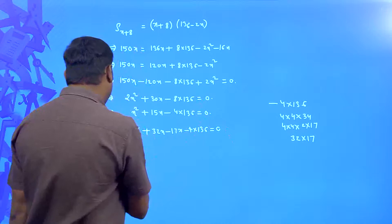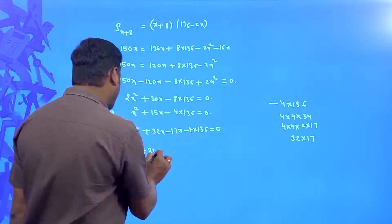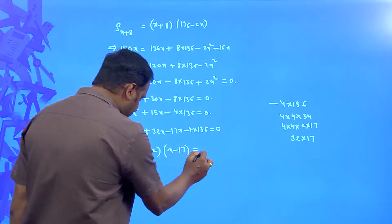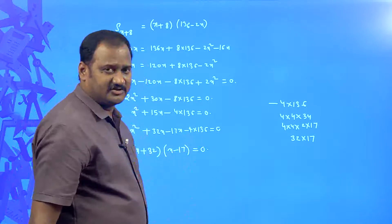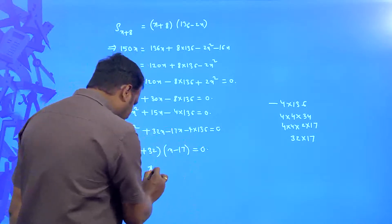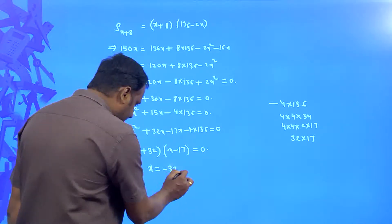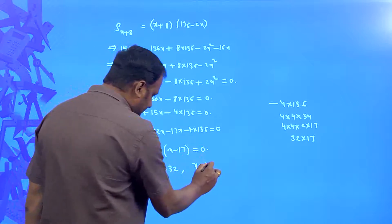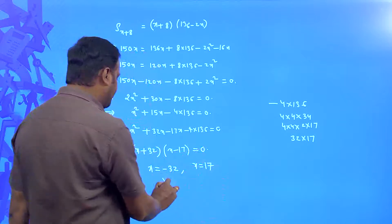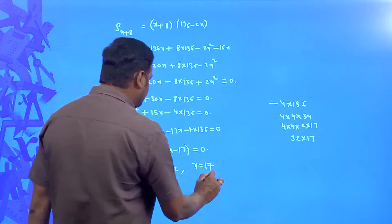You can factorize this as x plus 32 into x minus 17 is equal to 0. When the product of 2 terms is equal to 0, either first term equal to 0 or second term equal to 0. If x plus 32 equal to 0, x is equal to negative 32, x is equal to 17, but x is nothing but the number of working days, cannot be negative. So x is equal to 17.